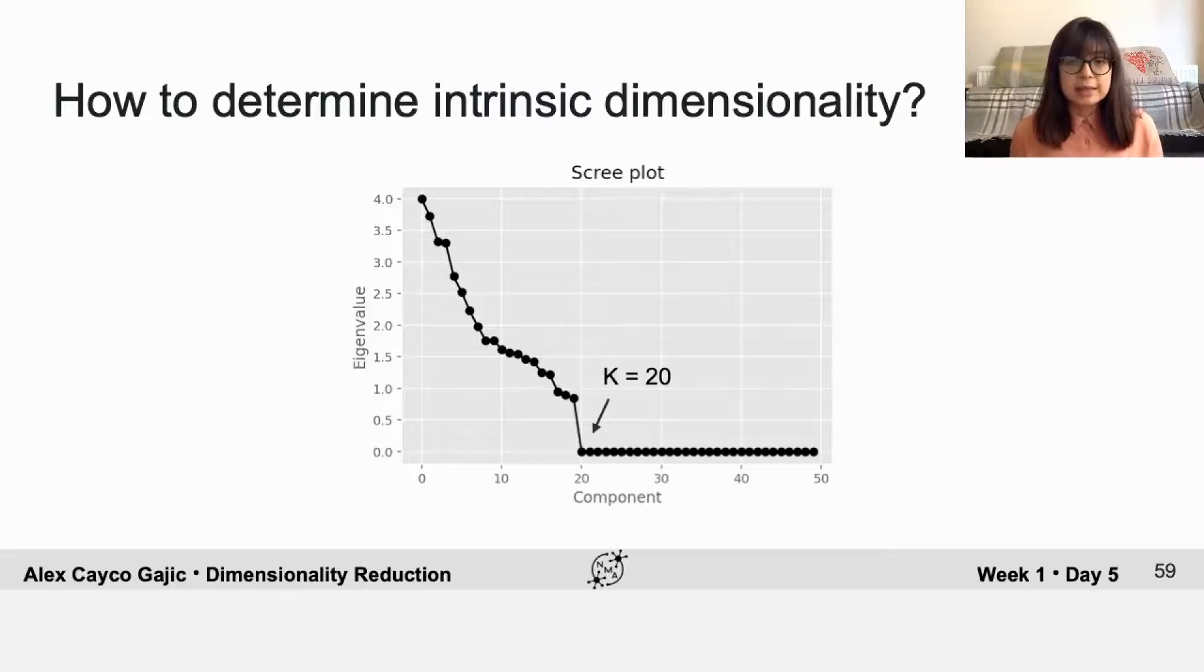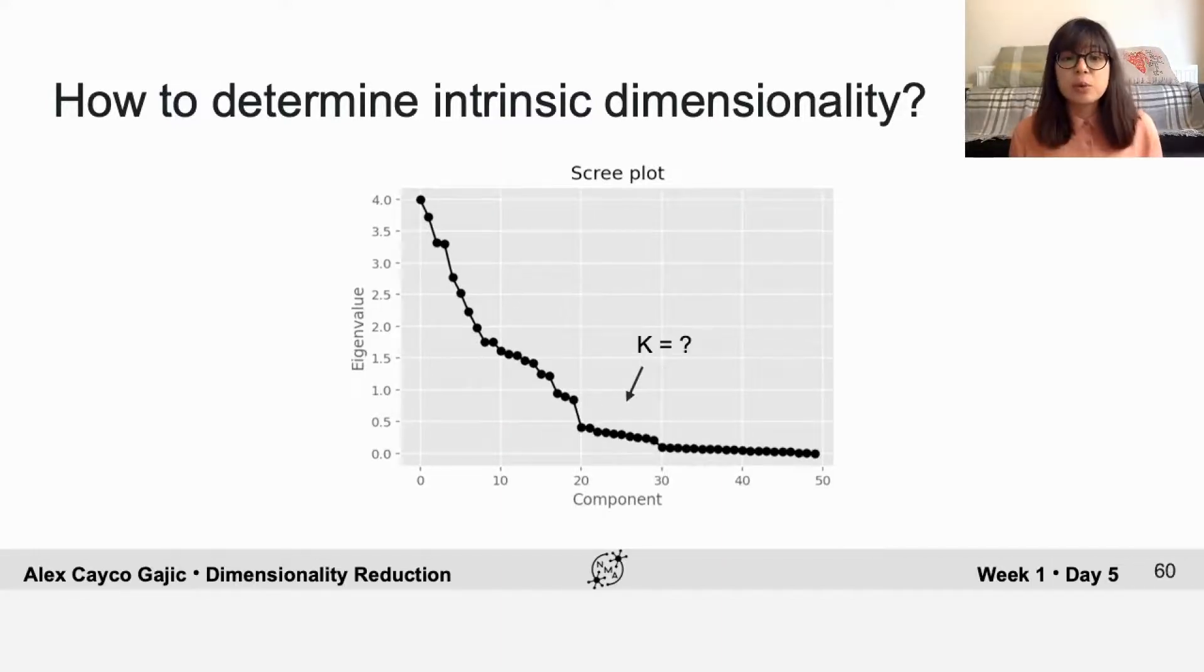But this is a very idealized example. Usually in neural data, because of noise, we don't ever see any zero eigenvalues. So it's usually much more of a graded decrease like in this example.